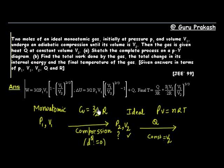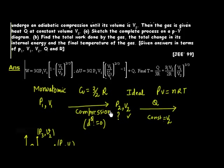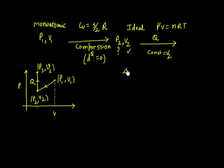Part B asks us to find three things: the total work done by the gas, the total change in internal energy, and the final temperature T3.